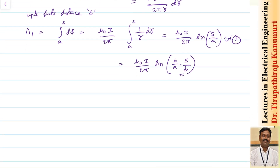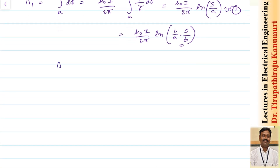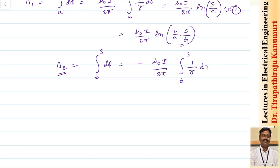The outer conductor also produces flux linkages, from r = B to S. Since it carries current −I, the flux linkages due to the outer conductor are: ∫(B to S) dΦ = −(μ₀I / 2π) ln(S/B). This is equation 2.